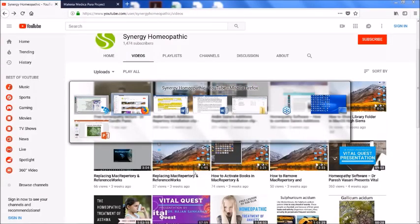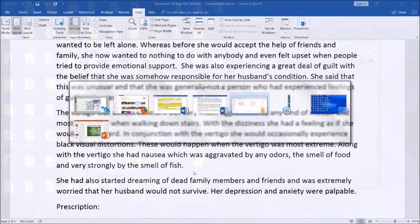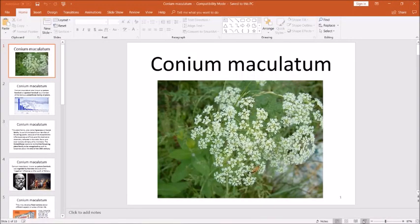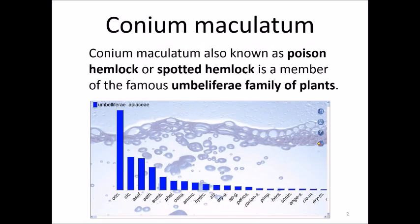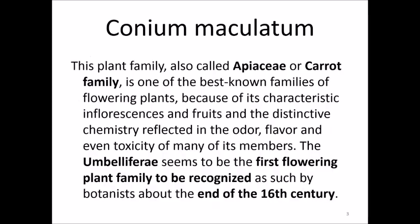I'm going to show you a PowerPoint — just a few slides I've created about Conium. Let's see if this fits what we know about Conium maculatum. Conium maculatum, also referred to as poison hemlock or spotted hemlock, is a member of what used to be called the Umbelliferae family, now called the Apiaceae under the new taxonomical system based on DNA called the Angiosperm Phylogeny Group system.